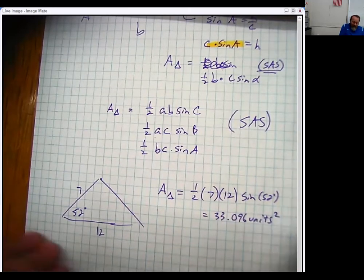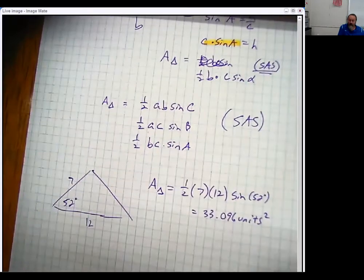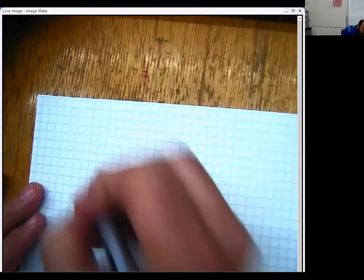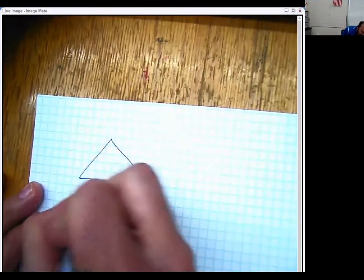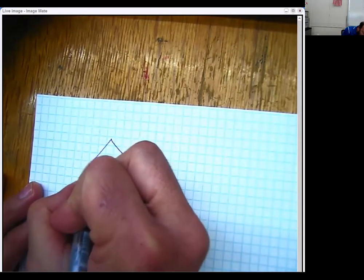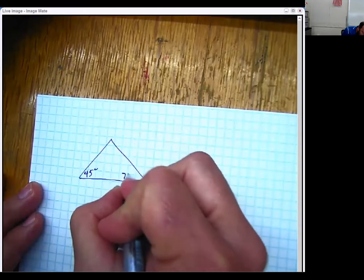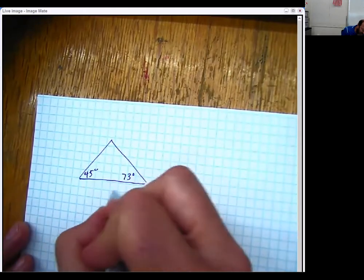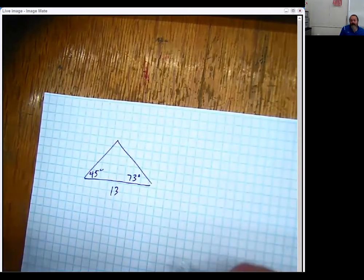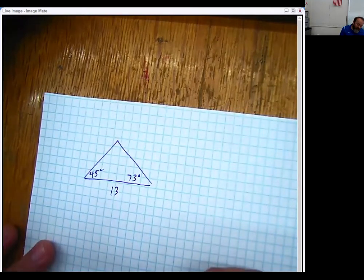Now, that does beg the question that what happens if you don't have a side angle side? What if somebody was mean to you and they gave you an ASA triangle, for example? So what if instead we knew that this angle down here was 45 degrees, this angle over here was 73 degrees, and we have this side down here, say, 13? Well, I don't have side angle side, do I?